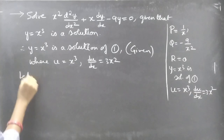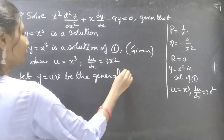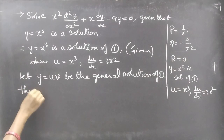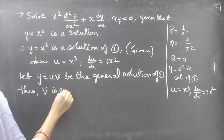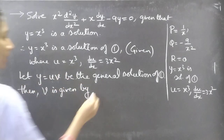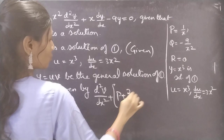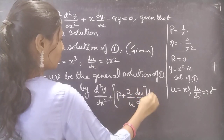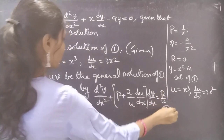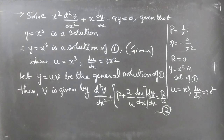Let y = uv be the general solution of equation 1. We already have u = x³ and we need to find v. The formula for v is: d²v/dx² + (P + 2/u · du/dx) dv/dx = R/u. Consider this as equation number 2. Now we substitute P, u, du/dx, and R into this equation.